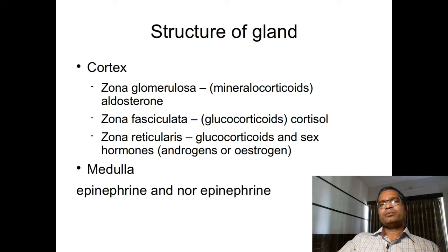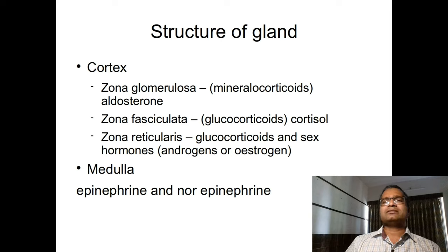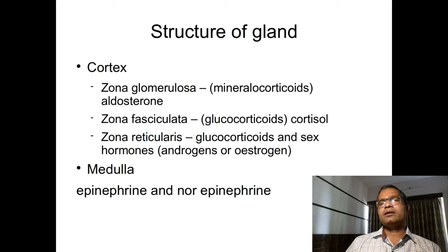Each suprarenal gland shows an outer cortex and inner medulla. During fetal life, the suprarenal gland is larger compared to the kidney. Afterwards it decreases in size to about 1/30th the size of the kidney in adults, but in infants it forms approximately one-third the size of the kidney.